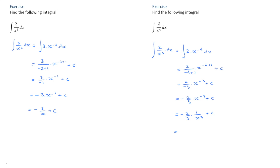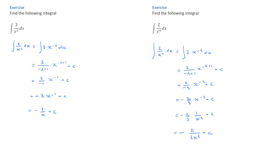Finally, we can write this as negative 2 over 3x cubed plus c. And there we go. Let's look at a couple more examples.